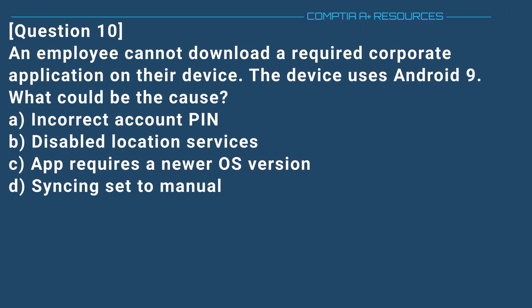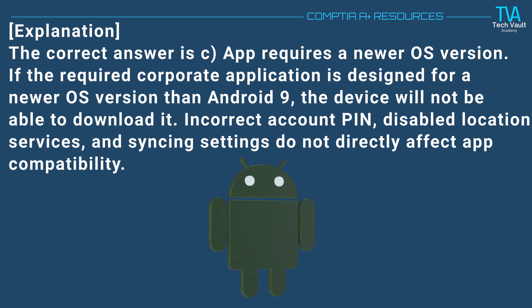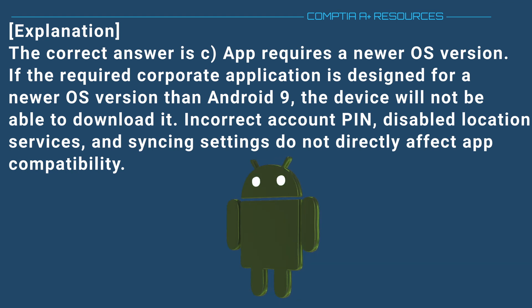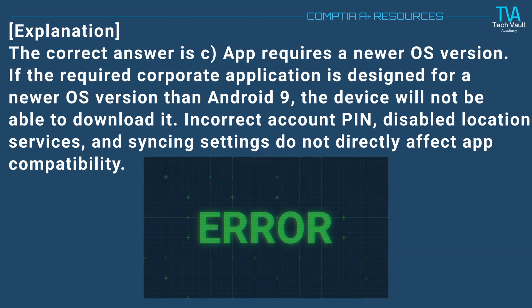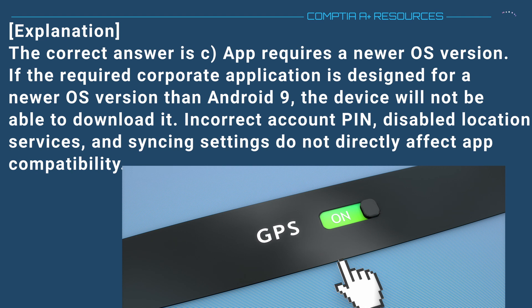Question 10. An employee cannot download a required corporate application on their device. The device uses Android 9. What could be the cause? A. Incorrect account PIN. B. Disabled location services. C. App requires a newer OS version. D. Syncing set to manual. The correct answer is C. App requires a newer OS version. If the required corporate application is designed for a newer OS version than Android 9, the device will not be able to download it. Incorrect account PIN, disabled location services, and syncing settings do not directly affect app compatibility.